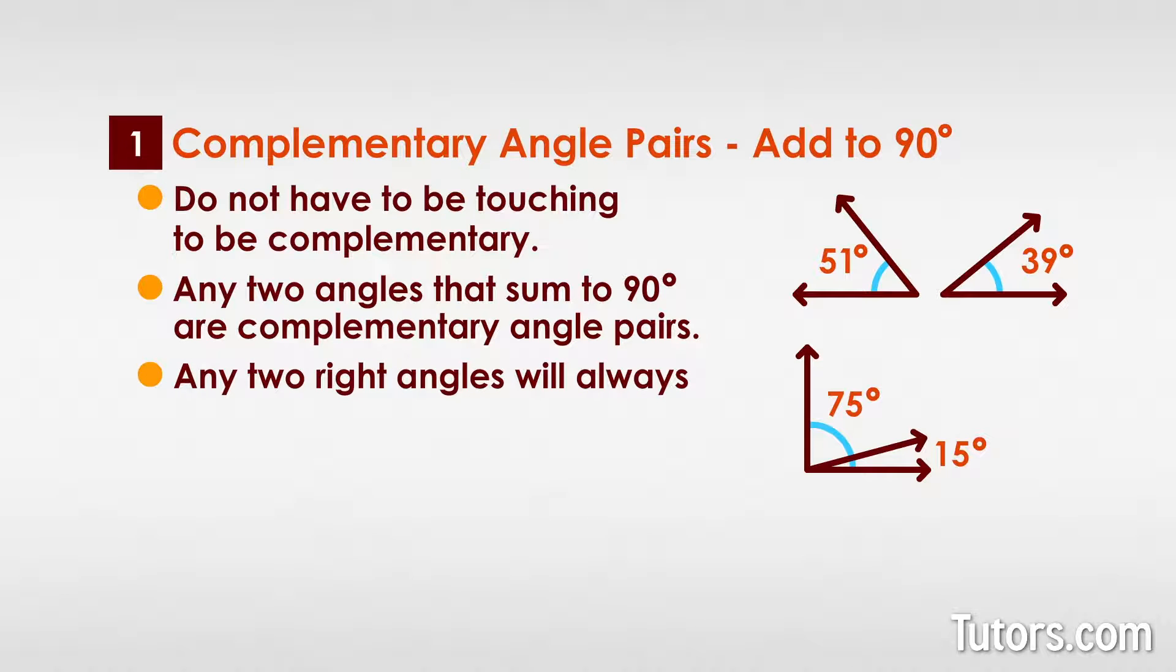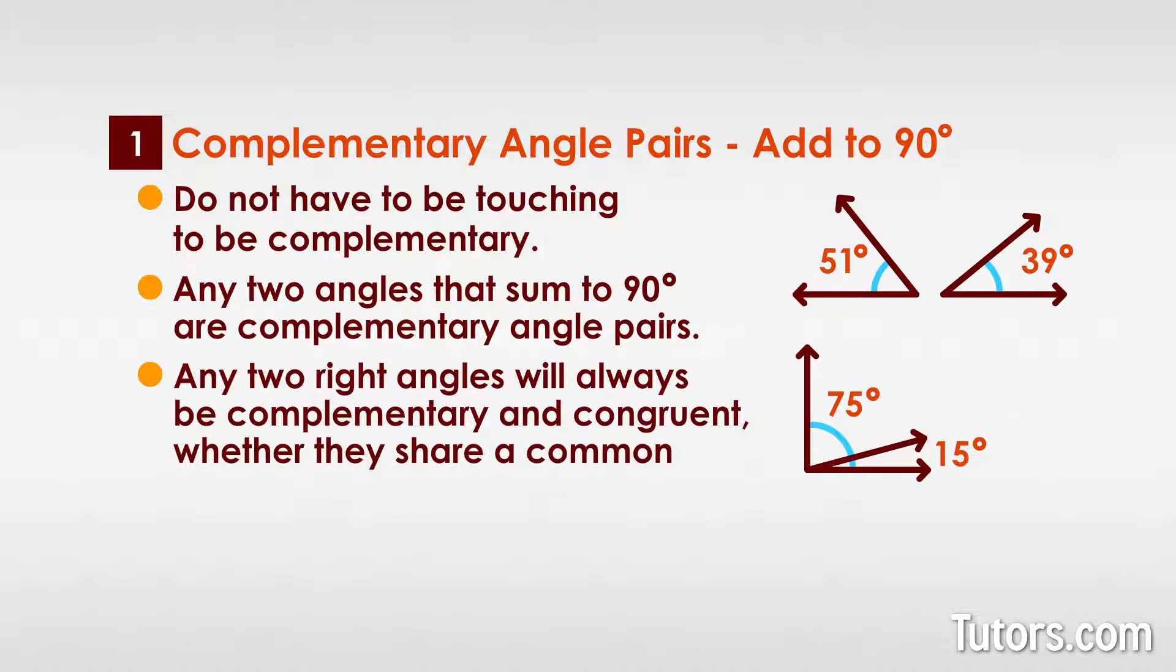Any two right angles will always be complementary and congruent, whether they share a common vertex or common side.